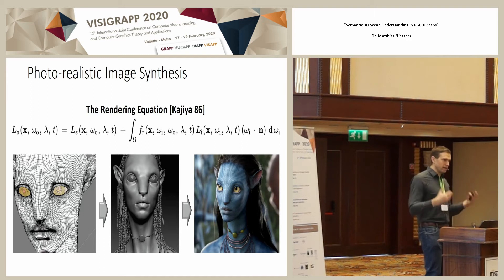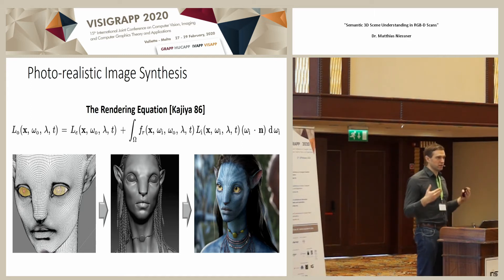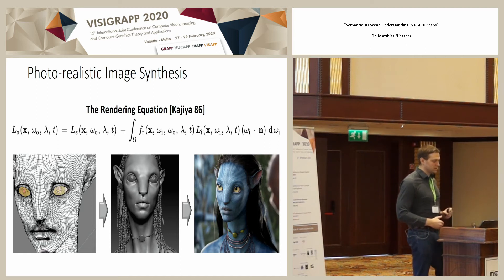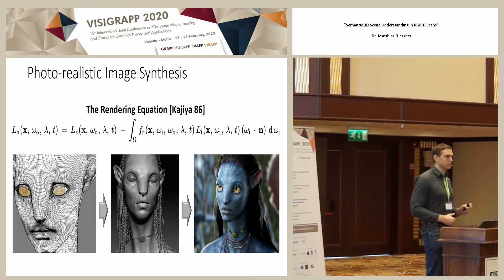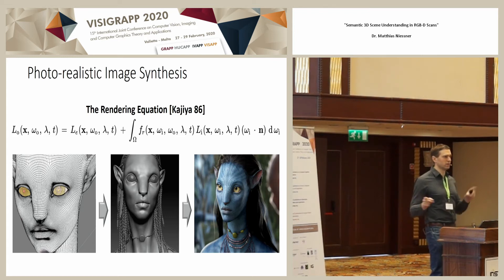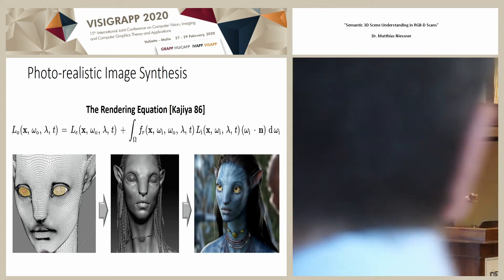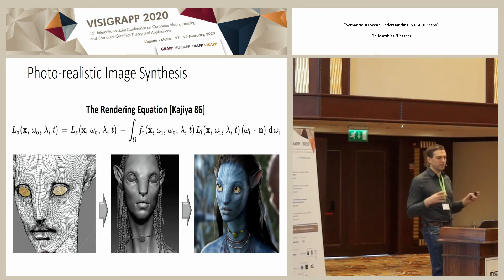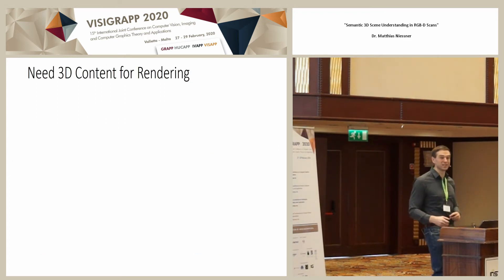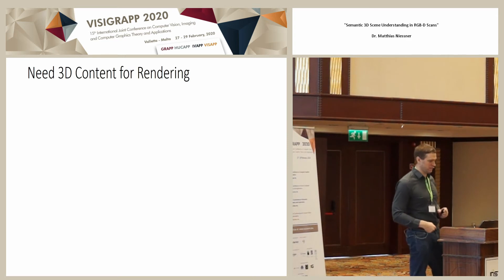Rendering has matured to a degree where it's actually ready — we can do cool stuff with it. The main challenge in current movies and games is not the rendering itself. Typically if you look at the credits of a movie, you see like three or four guys who worked on rendering, and you see like 500 artists who created the content. So it's really all about the content.